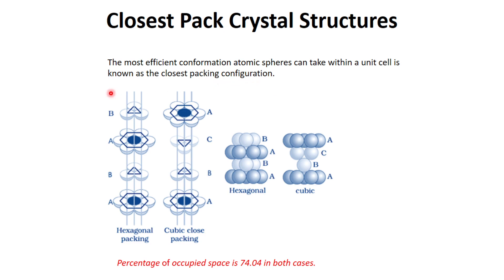There are two types of closest pack packing: one is hexagonal packing and the other is cubic close packing. In both types of packing, the percentage of occupied space is 74.04 percent in both cases.